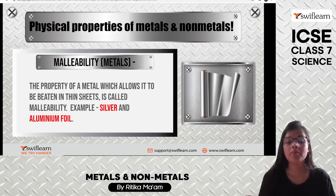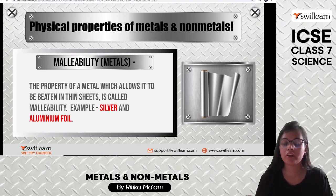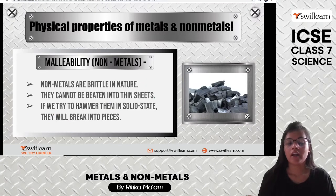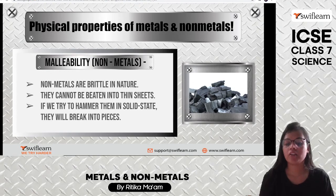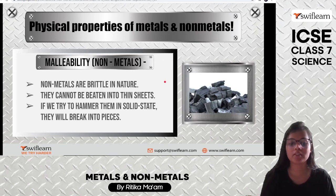Malleability is the property which allows any metal to be beaten into thin sheets. Silver foil and aluminium foil are examples of this property. Nonmetals are brittle — they break if we try to beat them into thin sheets. If we hammer them, they will break into pieces and cannot be beaten into thin sheets.